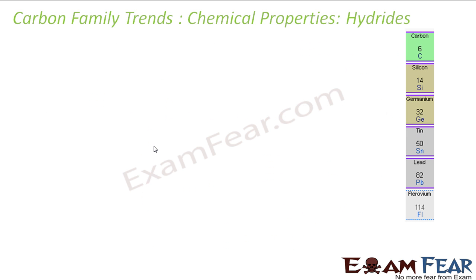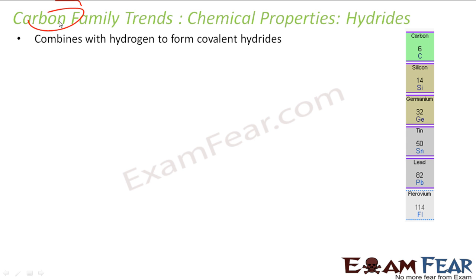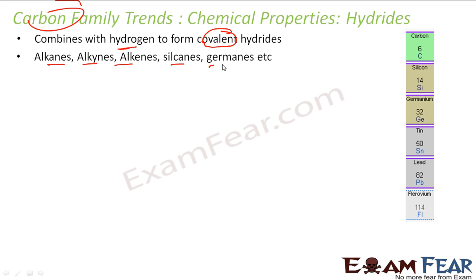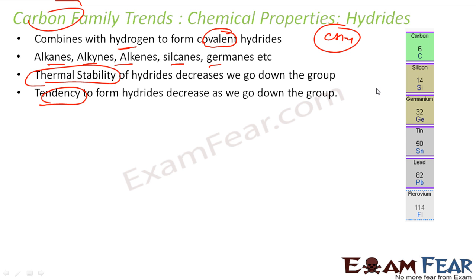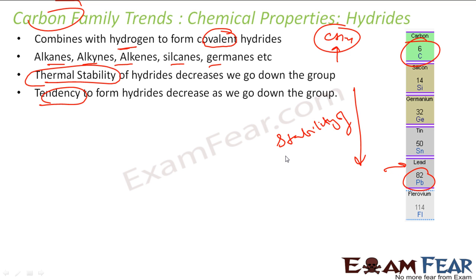Let's talk about hydrides. Carbon family elements combine with hydrogen to form covalent hydrides — for example, alkanes, alkenes, alkynes, and silicanes such as CH4. The thermal stability of these hydrides decreases as we go down the group, and the tendency to form hydrides also decreases going down the group. Carbon forms many stable hydrides while lead hydrides are quite unstable.